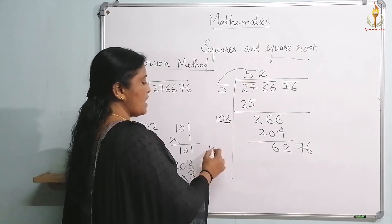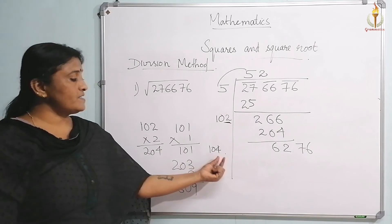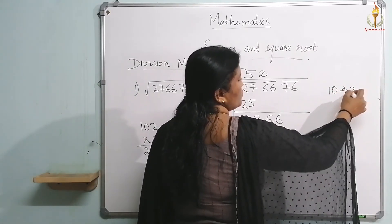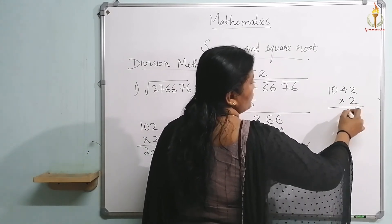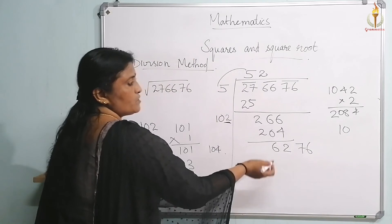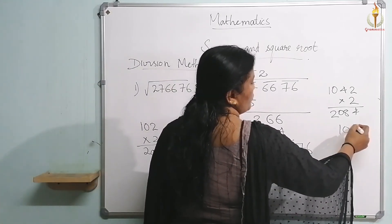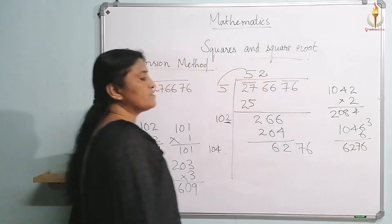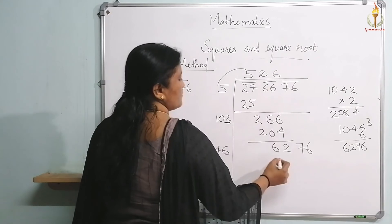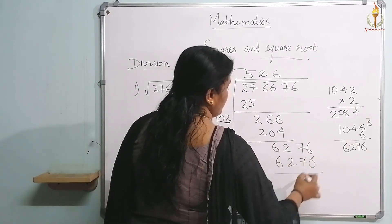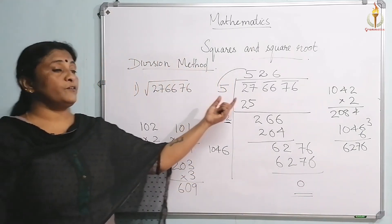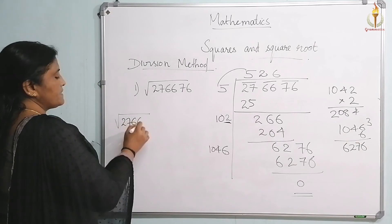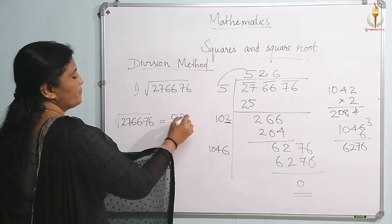Double the current quotient (52): 102 + 2 = 104. Find a digit to append to 104 such that (104_) × (_) ≤ 6276. Trying 6: 1046 × 6 = 6276. Put 6 in the quotient. Subtract: 6276 − 6276 = 0. The remainder is 0, confirming it is a perfect square. Therefore, the square root of 276676 is equal to 526.